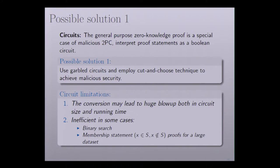We use the cut-and-choose technique to achieve malicious security, but it has some limitations. First, the conversion to a circuit may lead to a huge blow-up both in the circuit size and the running time. And second, it is inefficient in some cases, for example, the binary search or the membership statement proofs.